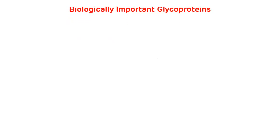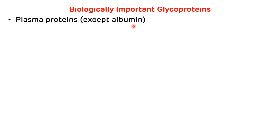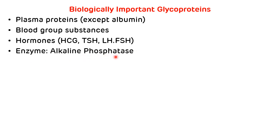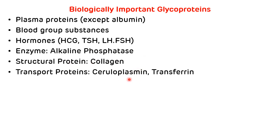Examples of biologically important glycoproteins: all plasma proteins except albumin are glycoproteins. Blood group substances of the ABO and Lewis system are examples of glycoproteins. Hormones like human chorionic gonadotrophin, thyroid stimulating hormone, luteinizing hormone, and follicle stimulating hormone are glycoproteins. Enzymes like alkaline phosphatase, structural proteins like collagen, and transport proteins like ceruloplasmin — which transports copper — and transferrin — which transports iron — are also examples of biologically important glycoproteins.